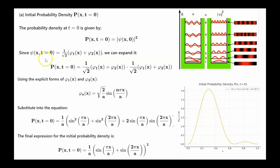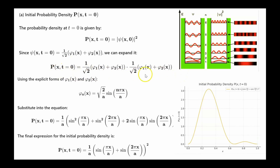The wave function at time t equals 0 is an equal linear combination of phi1 and phi2, where phi1 is the energy eigenstate corresponding to energy E1 and phi2 is the energy eigenstate corresponding to energy E2, written in the position basis. To get the probability, we take the wave function and multiply it by itself. To be technically correct, it's the wave function complex conjugate times itself, but because this wave function is real, we don't need to worry about the complex conjugate here. This gives the probability density: phi1 squared plus phi2 squared plus 2 phi1 phi2.